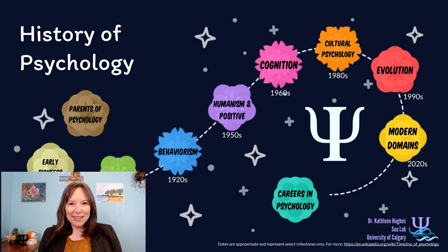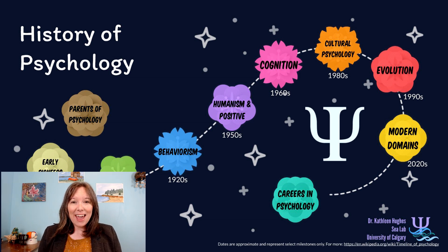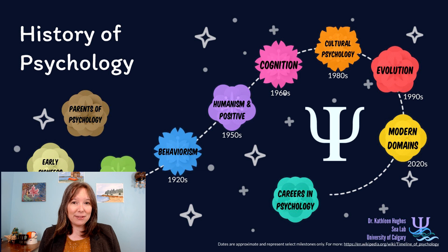Hi everyone and welcome to Intro Psych. We're starting things off in Unit 1 by looking at the history of psychology. It's important to note that psychology is a very pluralistic and fragmented discipline. There are lots of ways to look at psychology. In most Canadian universities, you can study psychology as an art or a science, and the Bachelor of Arts and Bachelor of Science usually only vary based on their electives. As we'll see over the course of the history of psychology, there are many different ways to view, study, and analyze the same psychological phenomena.